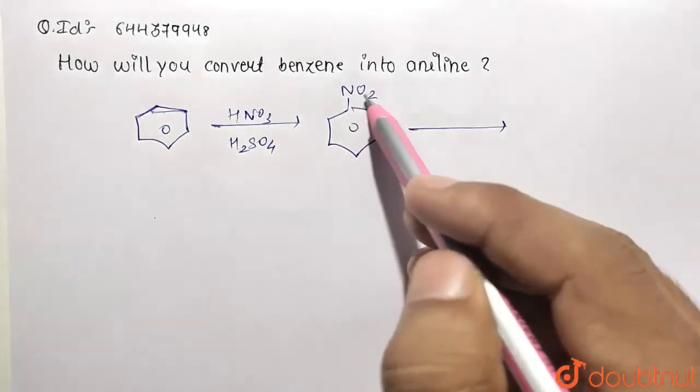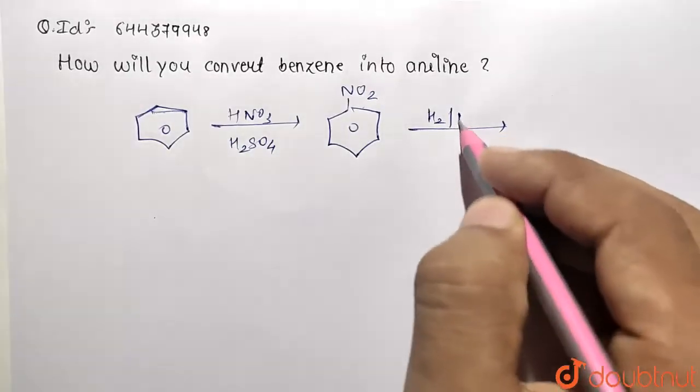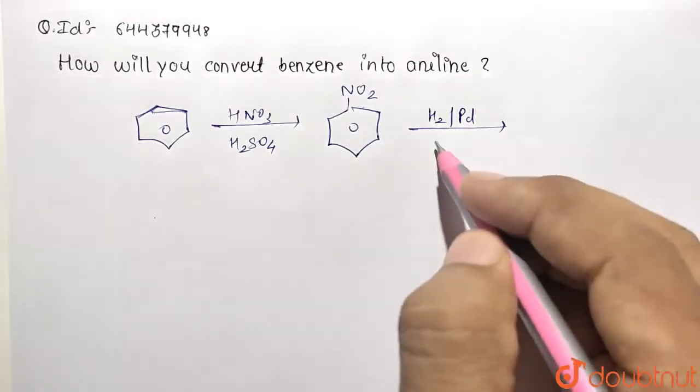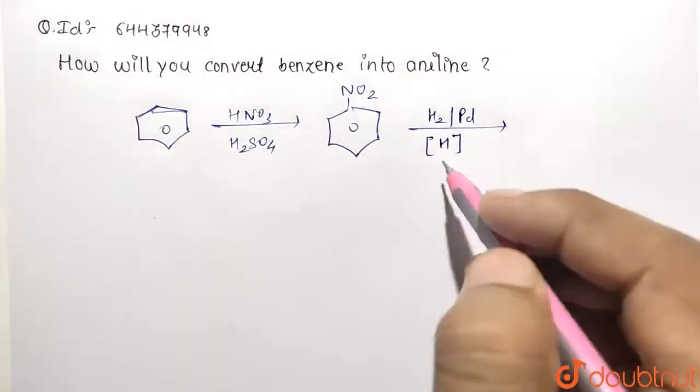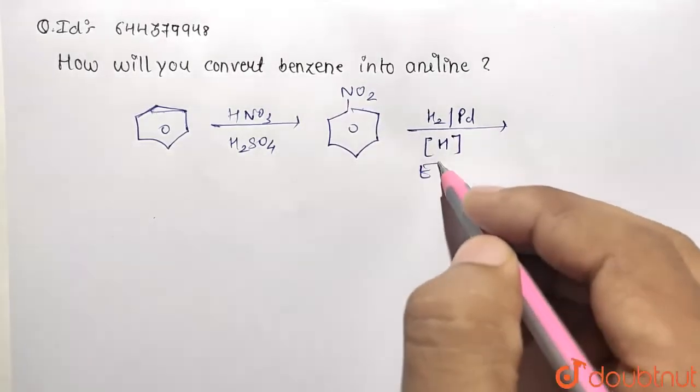Reduction needs to be done at the position of NO2. So we are going to add H2 in the presence of palladium. So this is going to provide the reduction reagent which is the hydrogen, and you need to take the presence of ethanol also.